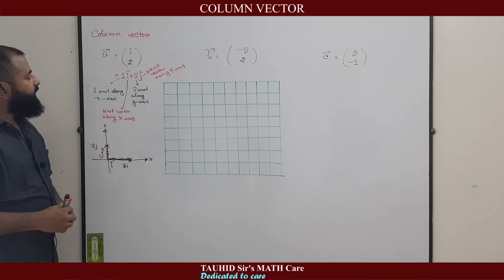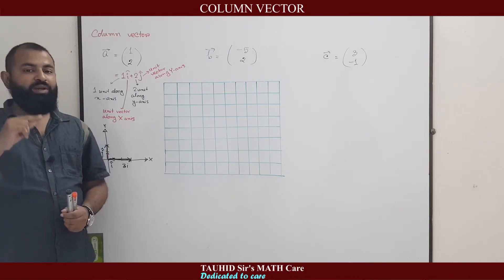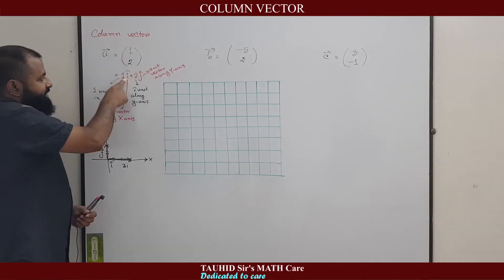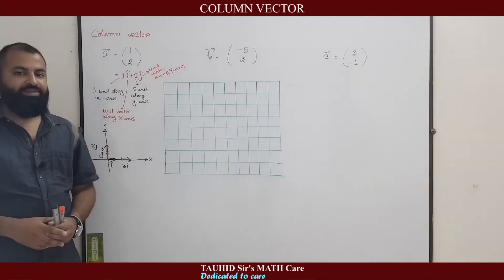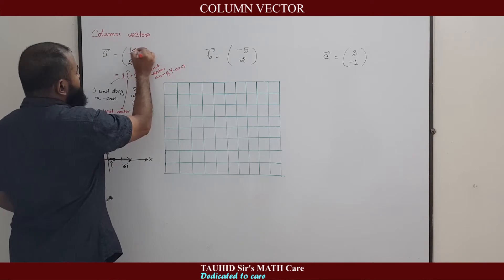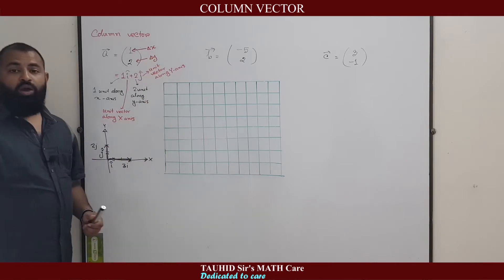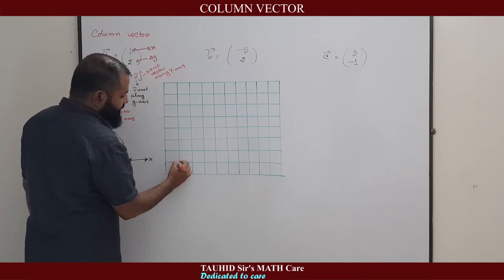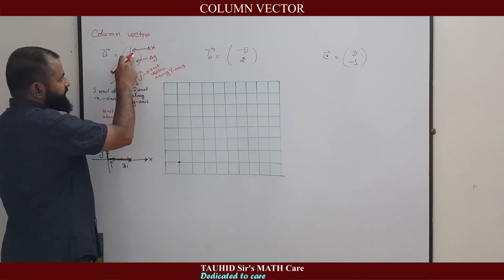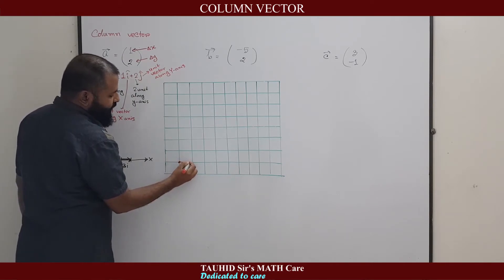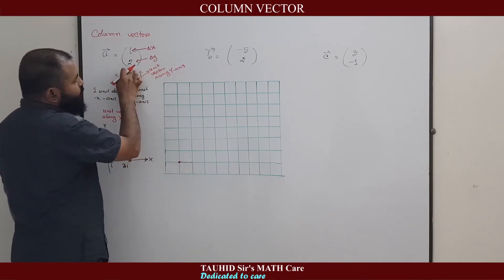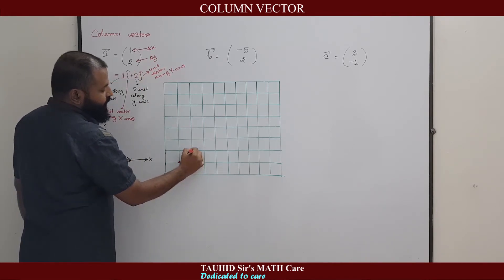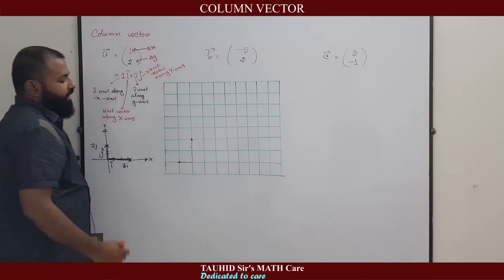Now what about vector a? Vector a is 1, 2. That means vector a is such a vector: it will move one unit along x-axis and two units along y-axis. So in column vector, this is delta x, change in x-axis. This is delta y, change in y-axis. If I want to represent a, for example, I start a from here. 1i, that means it will move one unit along x-axis, and 2j, it will move two units along y-axis.